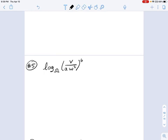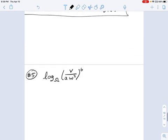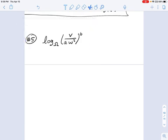Logarithm base omega of v over aw squared to the 6th power. So there's a lot going on here. One thing that might be distracting when you're looking at this is that base omega. Like, why is that even there?